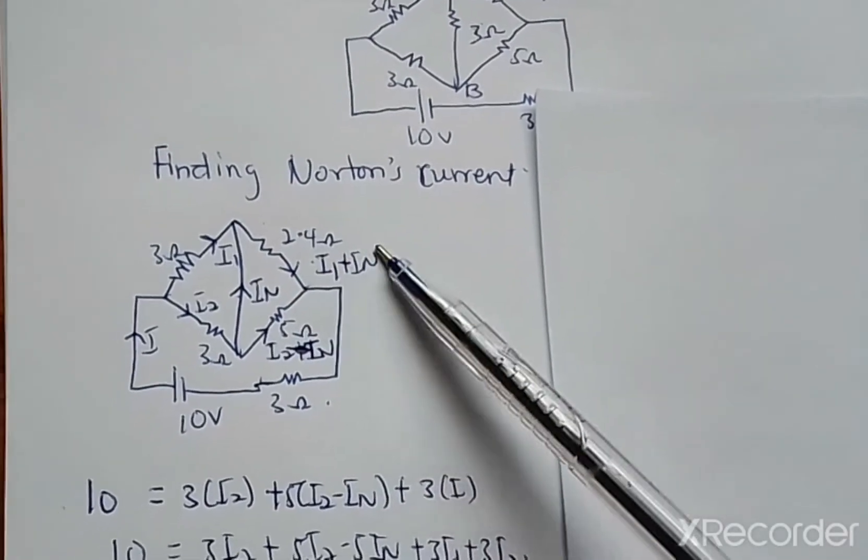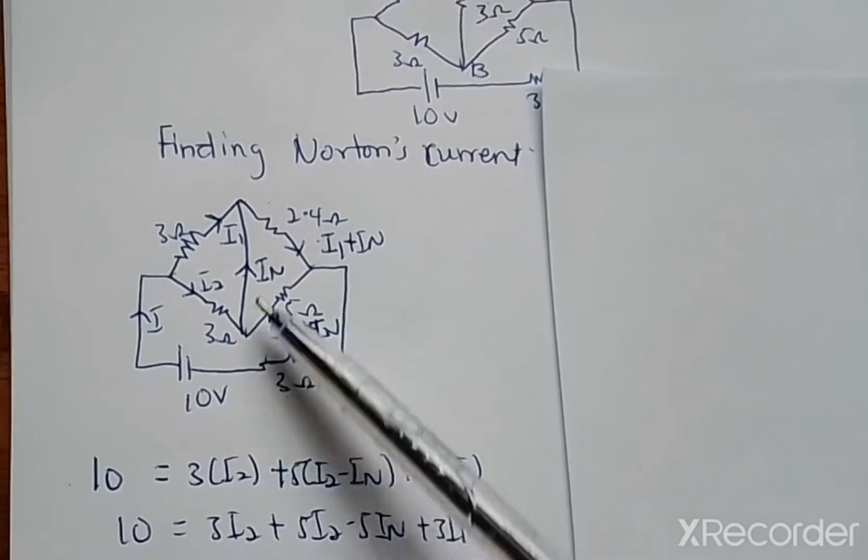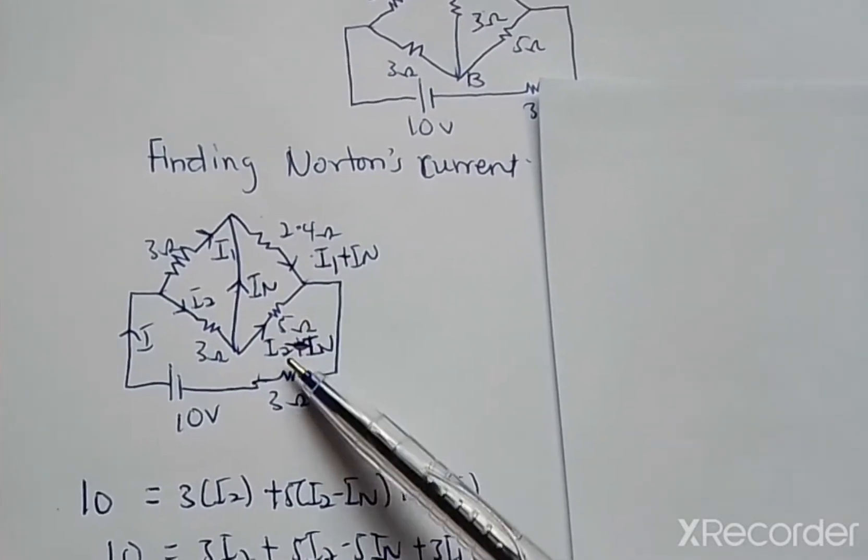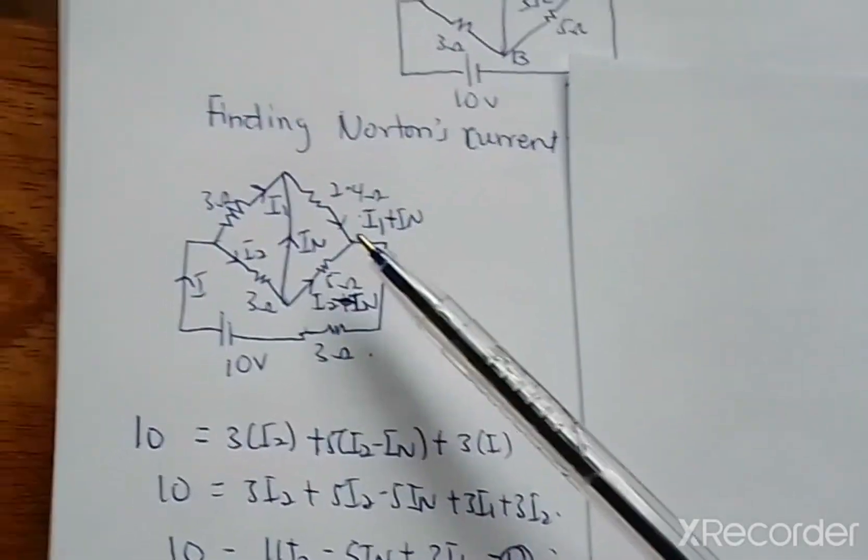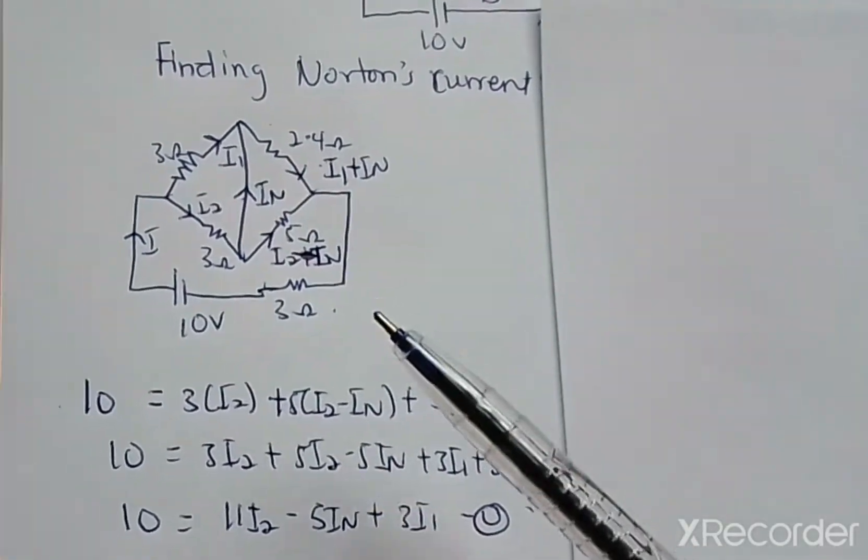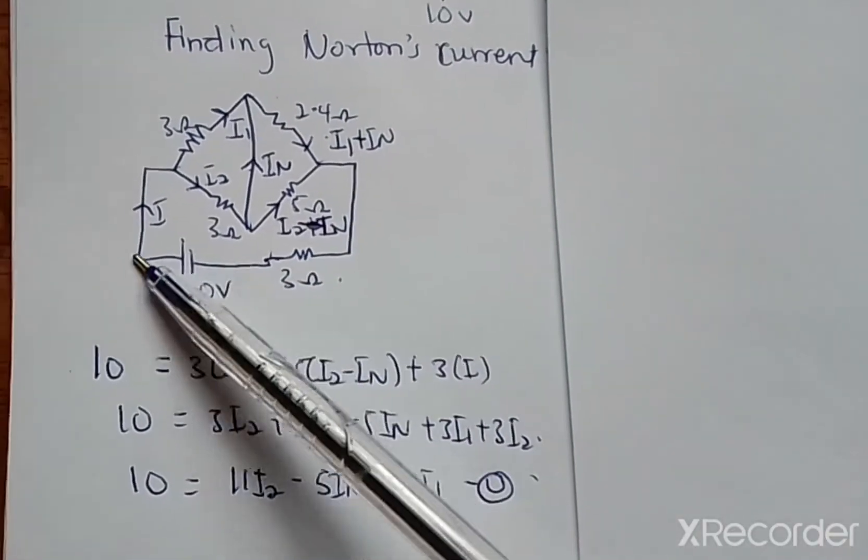That is I1 plus IN. And at this point, I2 will split into IN, the Norton current. So here will be I2 minus IN. Once you know the current through other resistances, you can use Kirchhoff's voltage law. Taking this loop, this first loop.